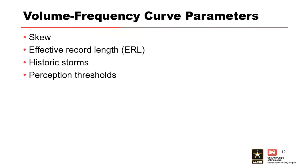There are multiple inputs to vary in the development of a volume frequency curve, all the way back to the best fit model, that could impact the resulting stage frequency curve. Some of those items are skew, effective record length (ERL), historic storm inclusion, and the use of perception thresholds. Effective record length and skew parameters are probably the two most important inputs for your volume frequency curve. Skew affects the tail of the distribution at rare AEPs, and the effective record length affects the mean hazard curve. Since these inputs tend to be uncertain, it's good practice to evaluate their sensitivity.